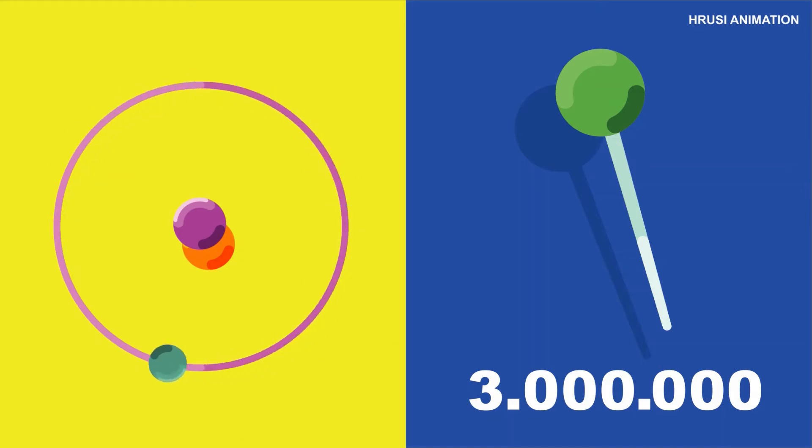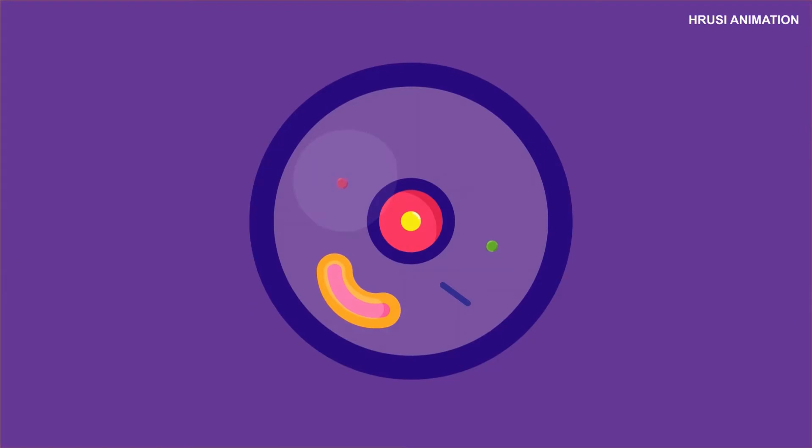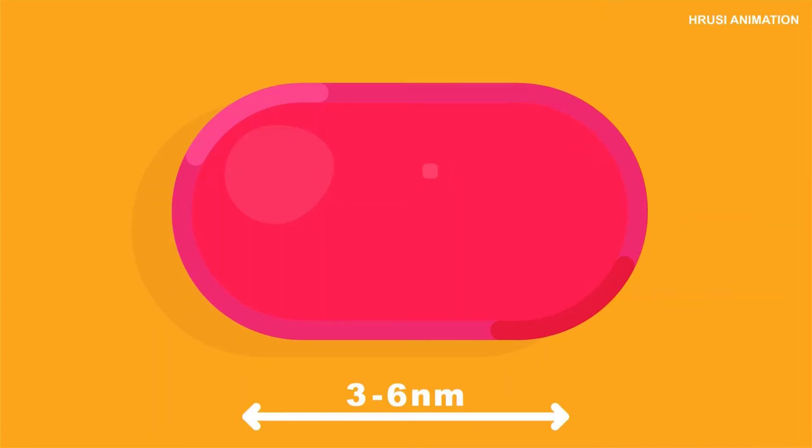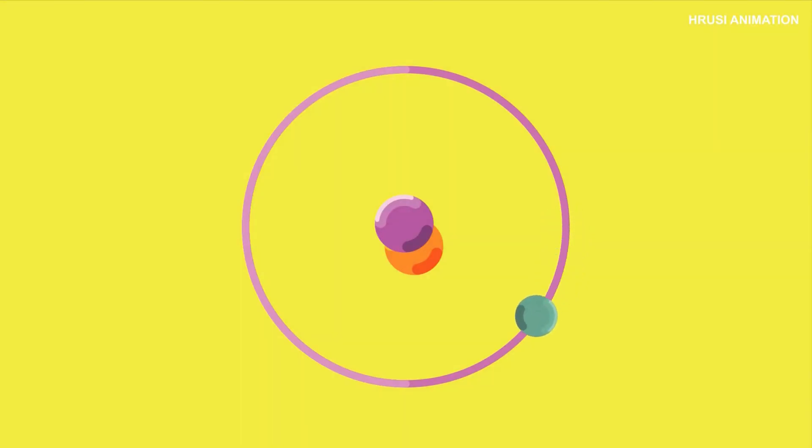For better understanding, let's do a little size comparison. This is a human cell. If we zoom in, we can see protein, and if we zoom in even more, we can see how small an atom is.